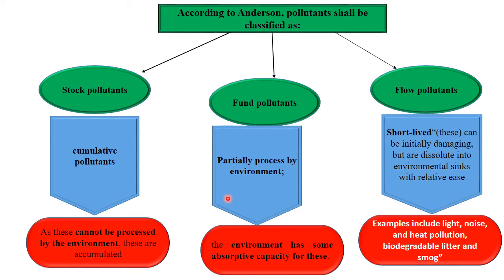Examples of flow pollutants include light, noise, heat pollution, biodegradable litter, and smoke. These are the various kinds of pollutants present in the atmosphere, or in any medium — be it atmosphere, hydrosphere, or lithosphere — interfering with various mediums of the environment.